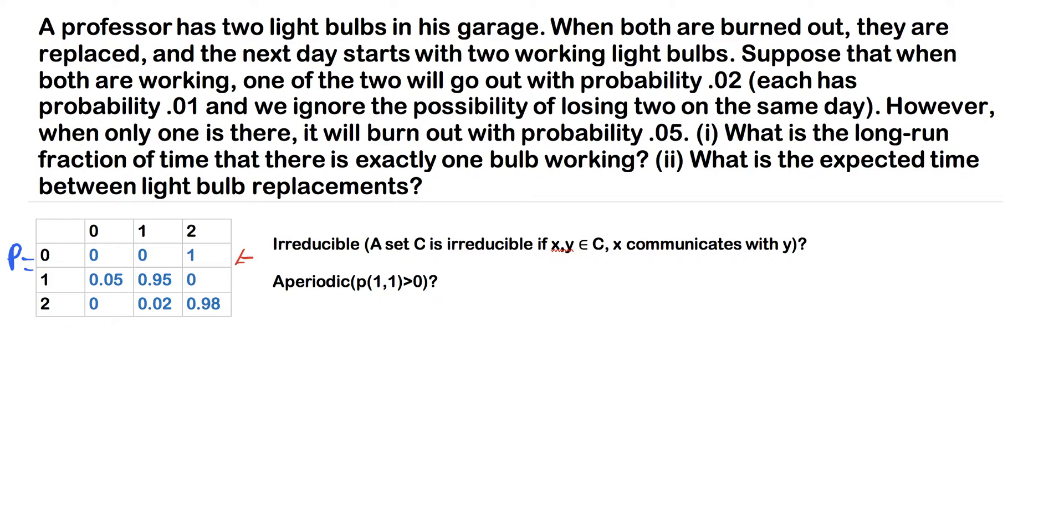So if we have zero working light bulbs at the end of day one, at the beginning of day two, we're always going to have two working light bulbs. This is why we have this one right here. Now, we know these rows need to add to one, so that means we have to have zero, zero for one, and then zero for also zero in the second state. So that's for the first row.